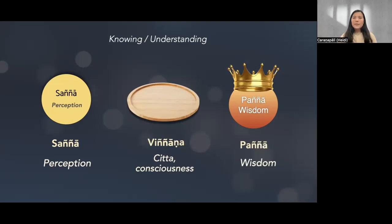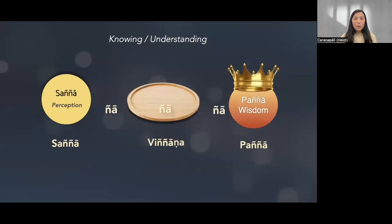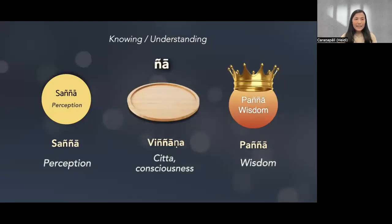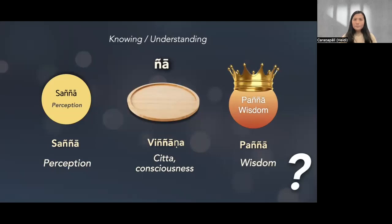If you see these three English words — perception, consciousness, and wisdom — they seem like three random things. But if you look at the Pali words, saññā, viññāṇa, and paññā, they all share the root 'ñā,' which in Pali means 'to know.' So all three know something about the object, but their mode of knowing is different. Saññā knows, citta knows, paññā knows — but how are they different and what do they have in common?